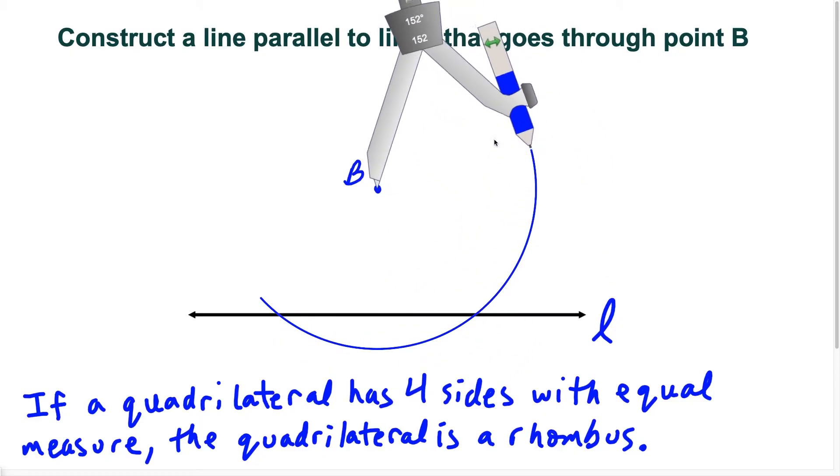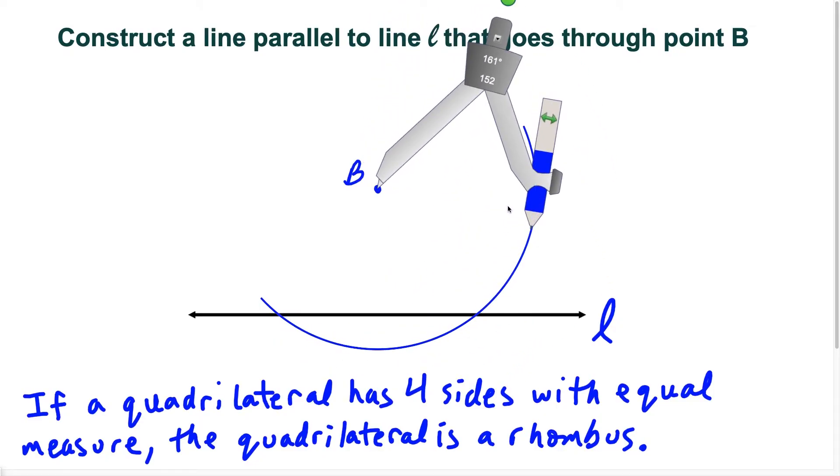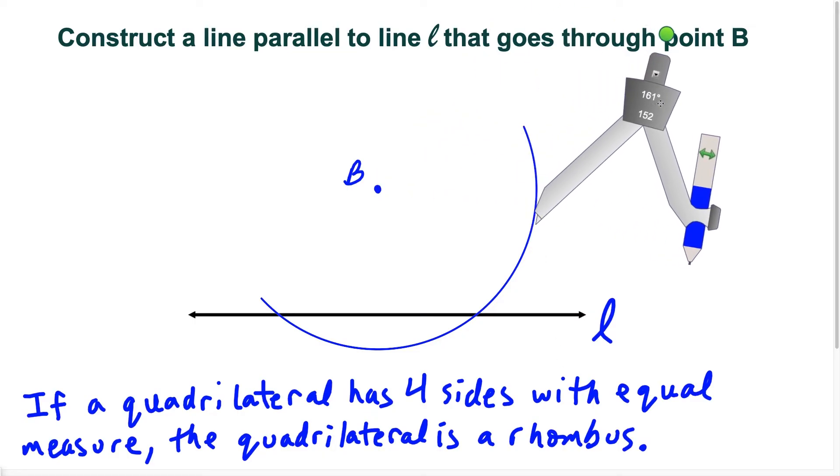And for this entire construction, I'm not going to change the length of the compass at all, because a rhombus has four sides with equal measure. So notice here we get a few intersection points that this arc is going to hit line L at two locations, but I'm going to label this location here as A.